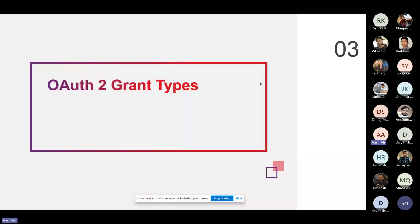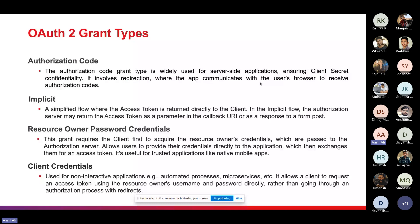There are four main grant types. First, Authorization Code — widely used for server-side applications maintaining client confidentiality; it involves redirection where the app communicates with the user's browser to receive an authorization code. Second, Implicit — a simplified flow where the access token is returned directly to the client, either as a parameter in the callback URI or as a response to a form post. Third, Resource Owner Password Credentials — the client acquires the resource owner's credentials and passes them to the authorization server, allowing users to provide credentials directly to the application which then exchanges them for an access token; useful for trusted applications like native mobile apps.